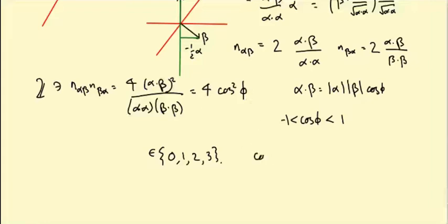For cos² of the angle—sorry, four times cos² of the angle—what does that mean? That means cos φ is one of: 0, ½, 1/√2, or √3/2.